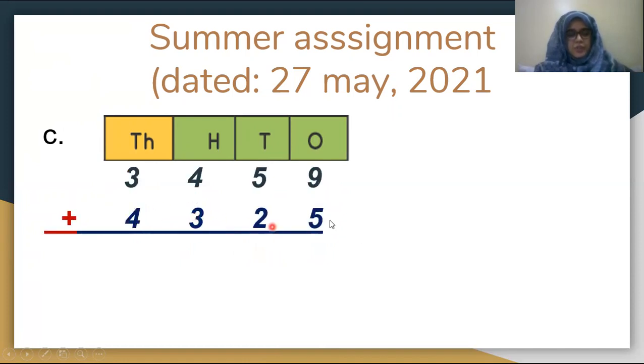Part C is 3459 plus 4325. 9 plus 5 is 14. Write 4 below and carry 1 to the next place value. 1 plus 5 is 6, 6 plus 2 is 8. 4 plus 3 is 7, and 3 plus 4 is 7. 7784 is your answer for part C.